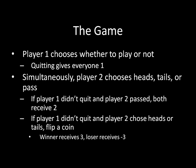Let's start with the situation where there's less information available. Player 1 chooses whether to play or not — a simple binary decision. If he quits, then everyone gets a flat payoff of 1. Simultaneously, player 2 has three actions: she can pick heads, tails, or pass. If player 1 didn't quit and player 2 passed, both players receive a payoff of 2. If player 1 didn't quit and player 2 chooses heads or tails, we flip a coin. If player 2 called it correctly, she receives 3 and player 1 receives negative 3. And if she's wrong, player 1 receives 3 and she receives negative 3.